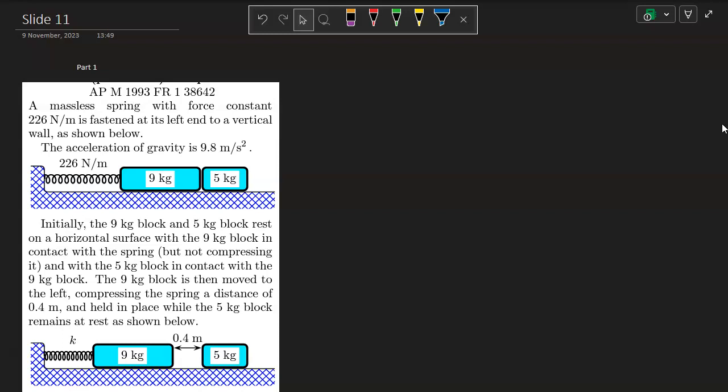Acceleration of gravity is 9.8 meters per second squared. So you have the spring with a K, that's the spring constant of 226 Newton's per meter. Mass 1 is 9 kilograms. Mass 2 is 5 kilograms.